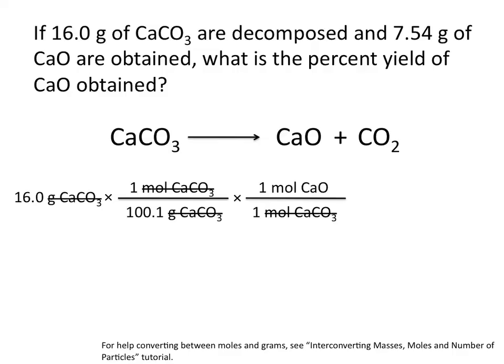But we want to calculate our percent yield. And because our actual yield is in grams, we need to calculate our theoretical yield in grams. So next, we'll convert from moles of calcium oxide to grams of calcium oxide using the formula weight of calcium oxide, which is 56.1 grams of calcium oxide per mole.